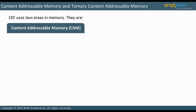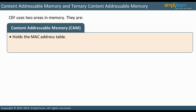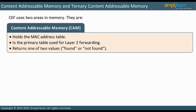Content Addressable Memory, or CAM, holds the MAC address table. It is the primary table used for Layer 2 forwarding. CAM processing returns one of two values: found or not found. These results are sufficient for MAC processing — either the MAC is found or not found.